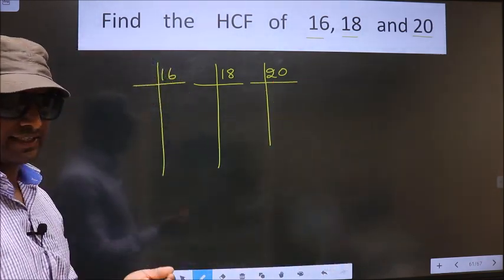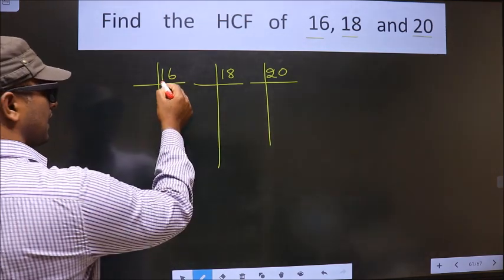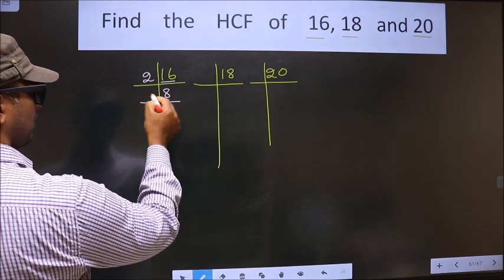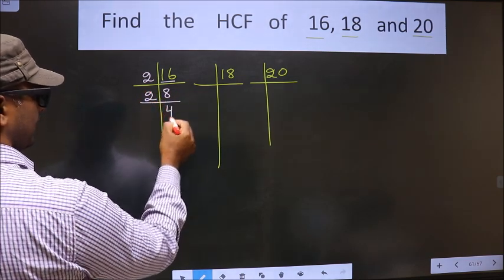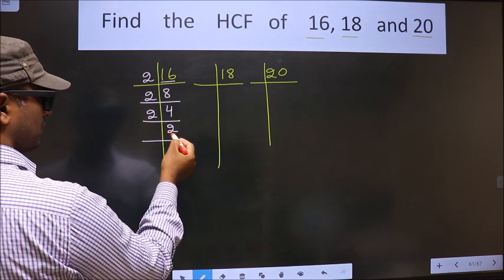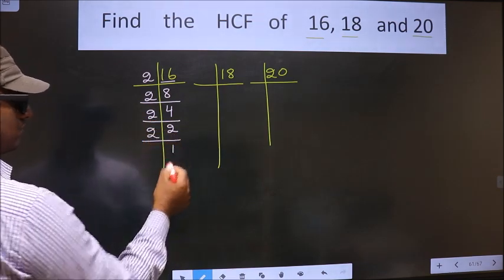Okay, next. Here we have 16. 16 is nothing but 2 times 8. Now 8 is 2 times 4. 4 is 2 times 2. 2 is the prime number so we take 2 times 1.